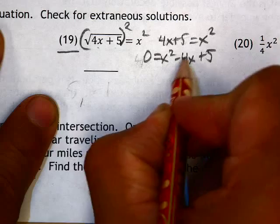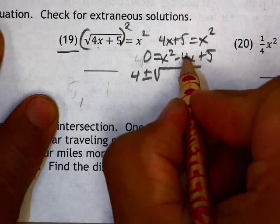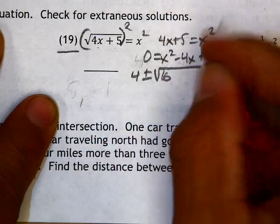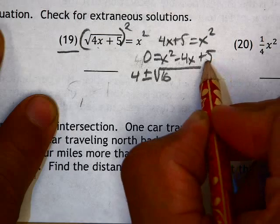So minus b, minus a negative 4 is 4, plus or minus the square root of b squared, 16, minus 4a, which is 1, times c.